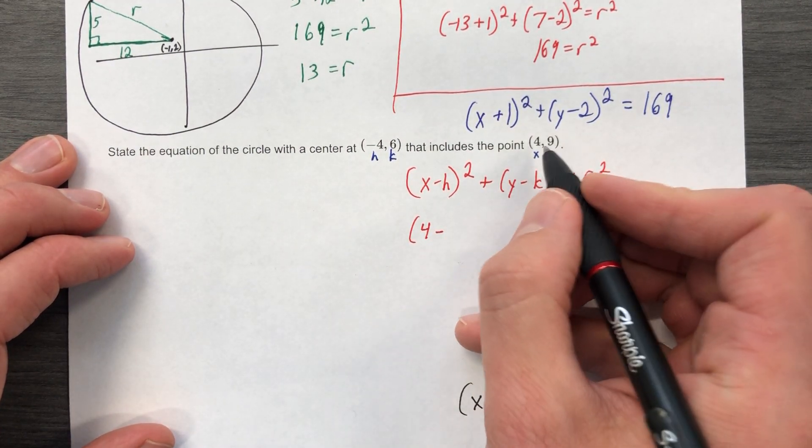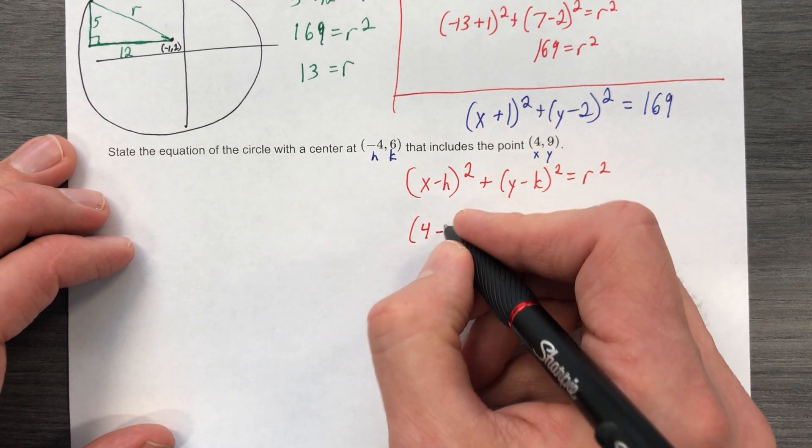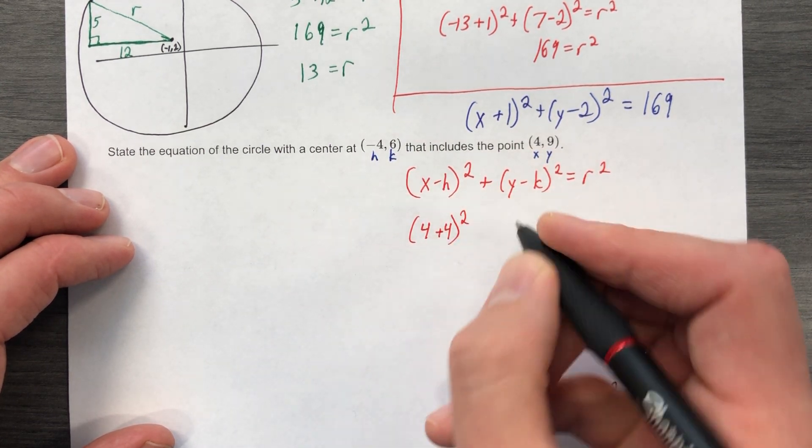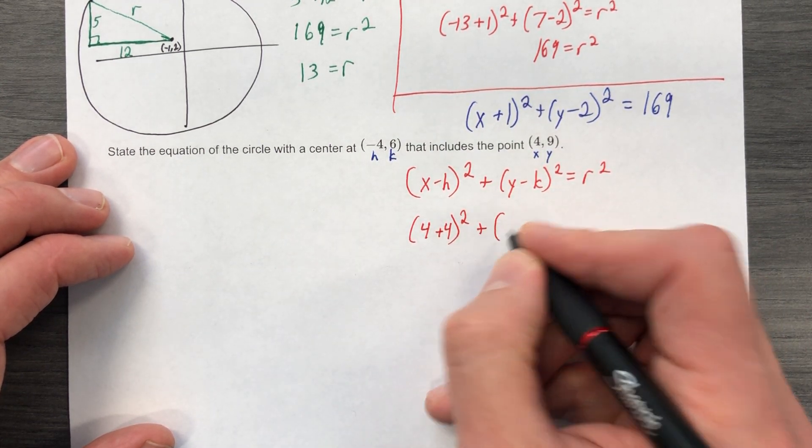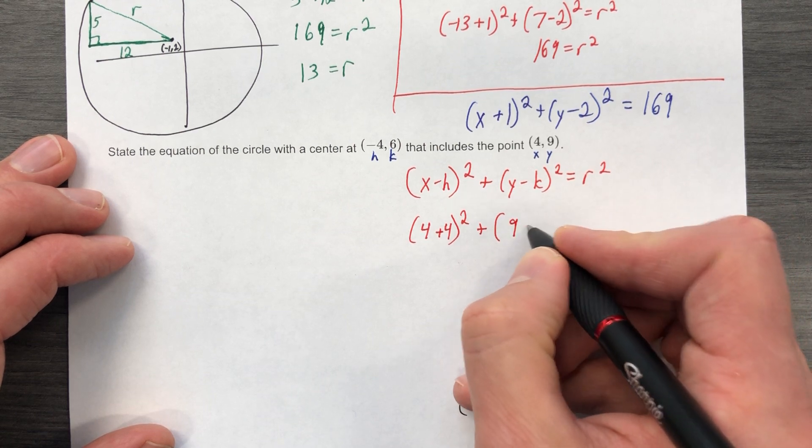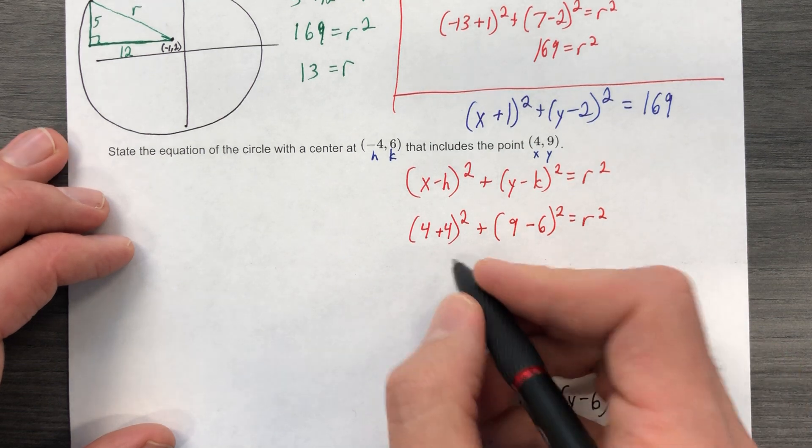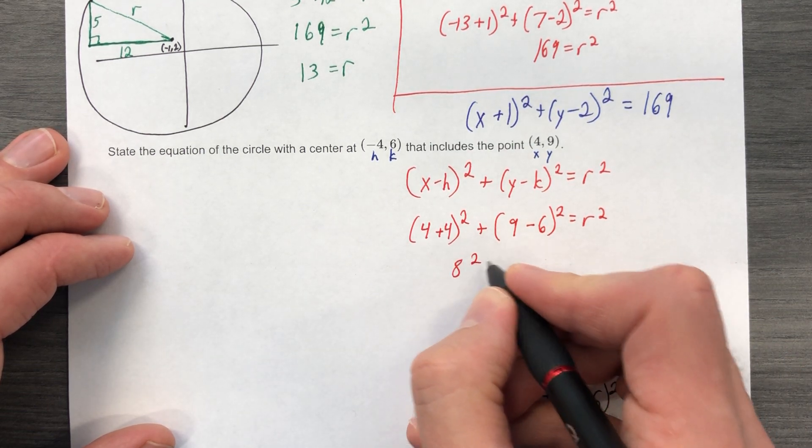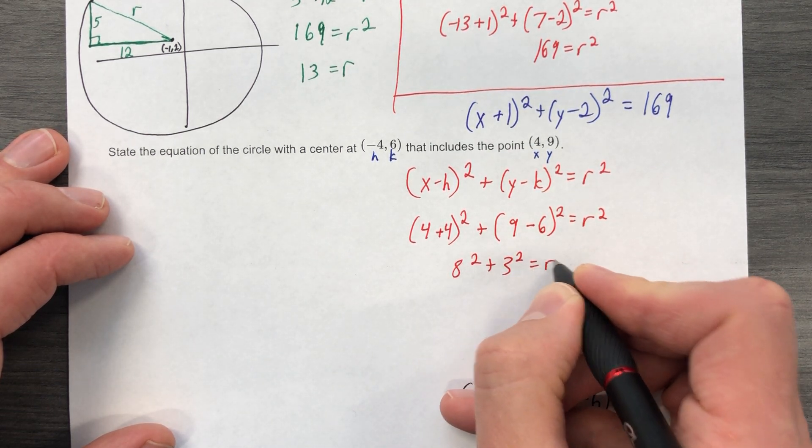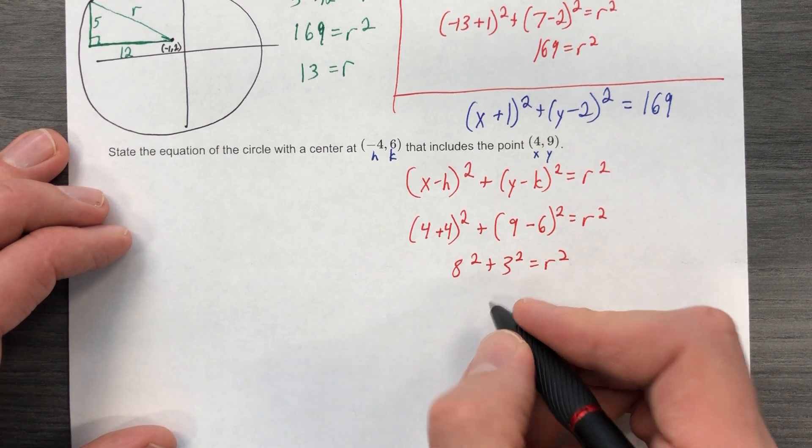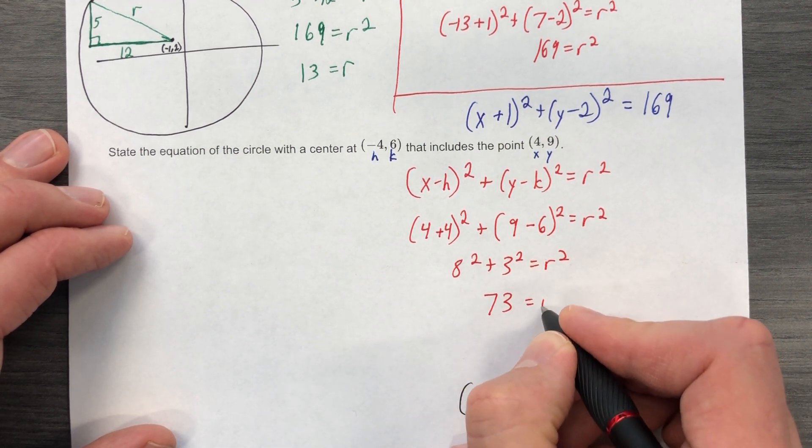And we'll plug those things in. So, 4 minus negative 4, x minus h, 4 minus negative 4, that indeed is 8 squared. And then 9 minus 6, y minus k, that's 3 squared equals r squared. We have 8 squared plus 3 squared equals r squared. That's 64 plus 9. That's 73.